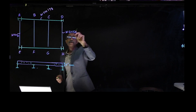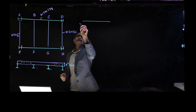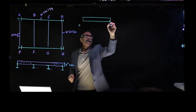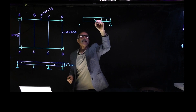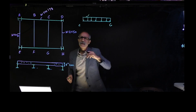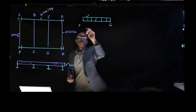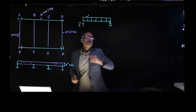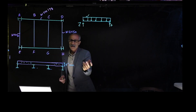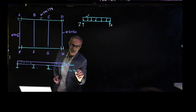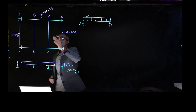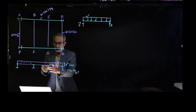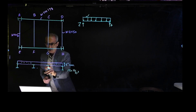Let's take beam CG and calculate the load on top of it, shown as a uniform distributed load in pounds per foot. It is simply supported with a pin and a roller. We need to find the weight of the concrete — concrete is 150 pound per cubic foot. The tributary area for this beam is the distance halfway to the next beam on each side. If the beam spacing is 10 feet, the tributary width is 5 feet on each side, giving a total tributary width of 10 feet.